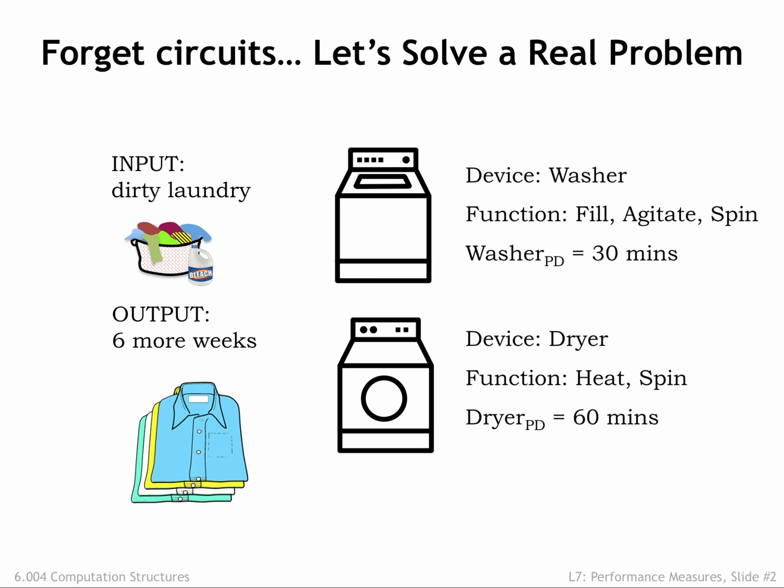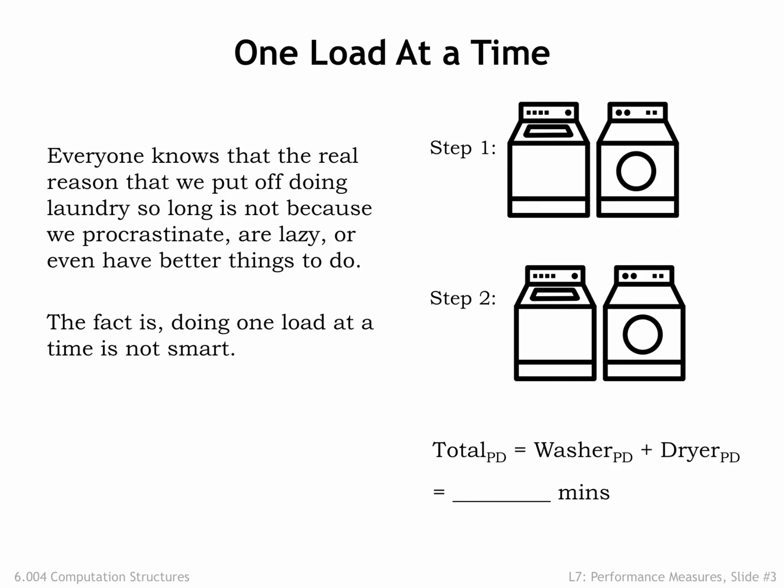Our laundry follows a simple path through the system. Each load is first washed in the washer and afterwards moved to the dryer for drying. There can, of course, be delays between the steps of loading the washer, or moving wet wash loads to the dryer, or in taking dried loads out of the dryer. Let's assume we move the laundry through the system as fast as possible, moving loads to the next processing step as soon as we can. Most of us wait to do laundry until we've accumulated several loads — that turns out to be a good strategy.